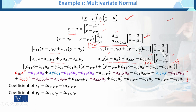Looking at the expanded form, shown in different colors: the coefficient of x² is a11, which equals 1. The coefficient of y² is a22, which also equals 1. For the xy coefficient, since in the given density there is no xy term, it equals 0. Now identifying the coefficient of x — shown in purple — we have terms involving a11, mu_x, a21, and a12.